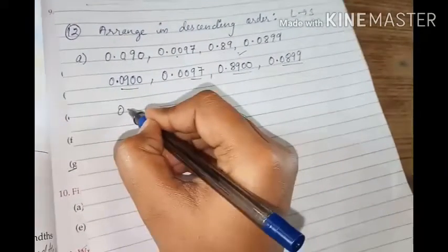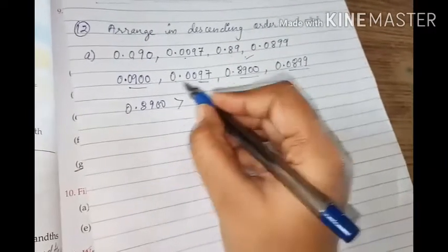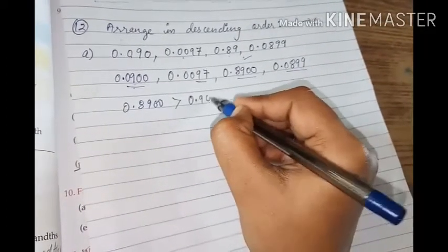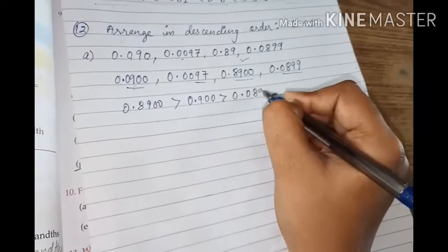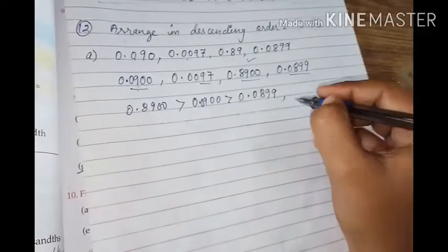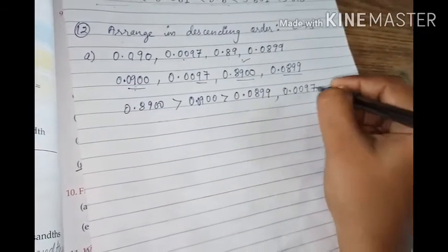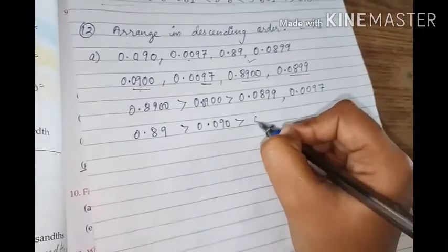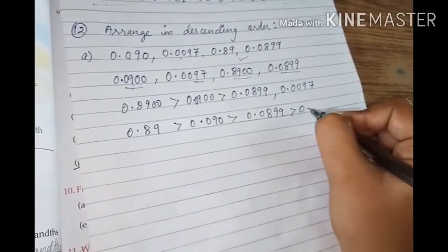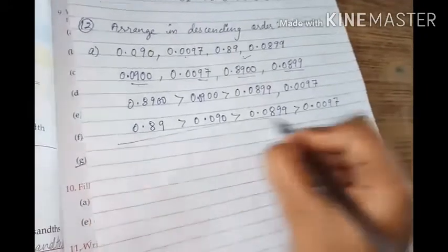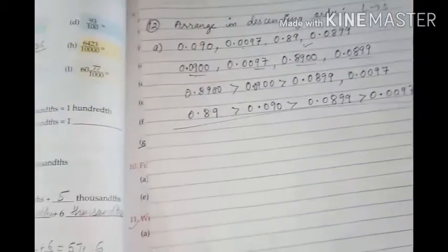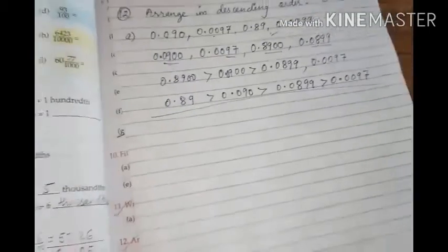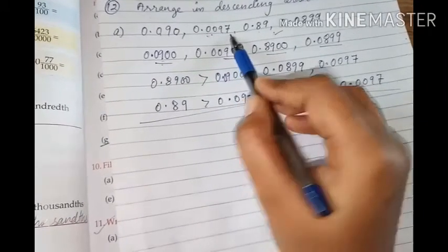Now you can see that this is 900, it is 97, 8,900, 899. Because 0.0 is the same in all. Largest number we have to find out, so this is your largest number. 0.8900 is the largest number. After this 900, because 800 is smaller, so 900 is the next. So 0.0900 is next, and then we have 0.0899, then we have here 0.0097. Descending orders maybe you can do it very well. But just always remember that you have decimals after decimals are there. So if you have maximum 4 decimals are there after decimals, so try to do them.